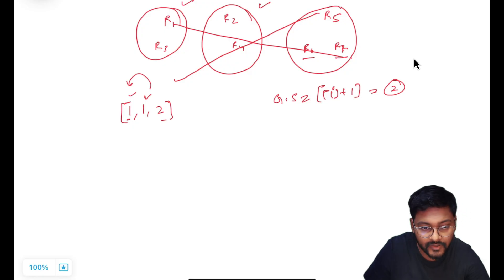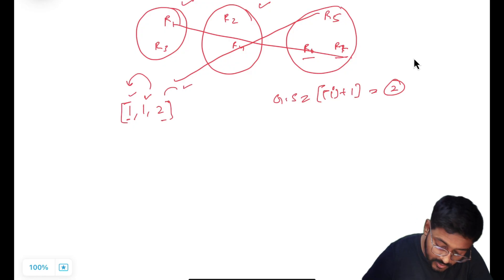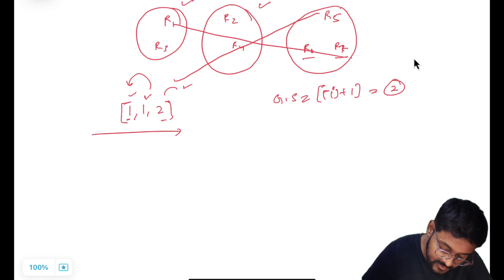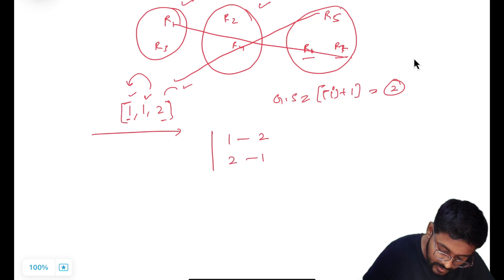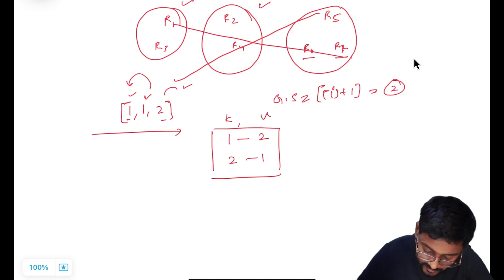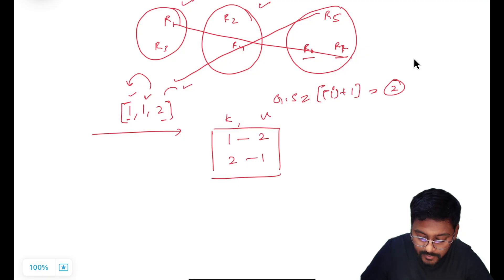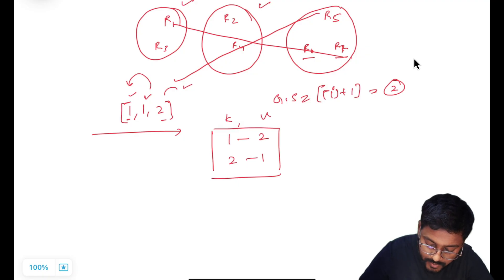So if somehow I capture the frequency: answer 1 is coming two times and answer 2 is coming one time. This is my key and this is my value. Answer 1 is coming two times, and answer 1 means the group size is two.